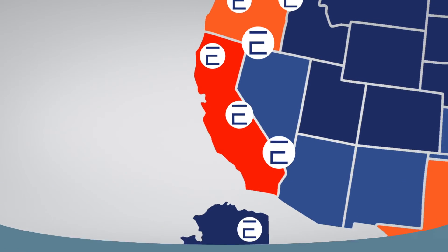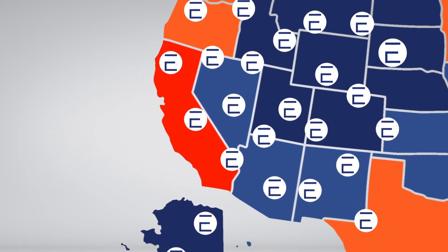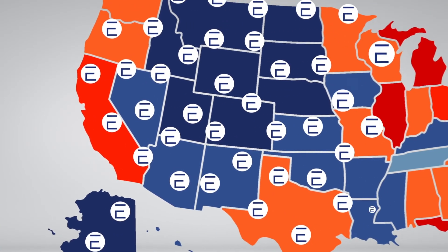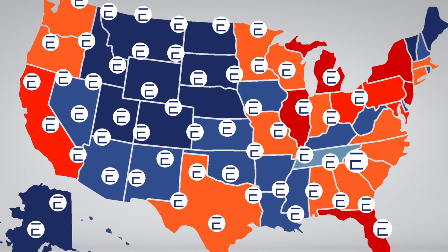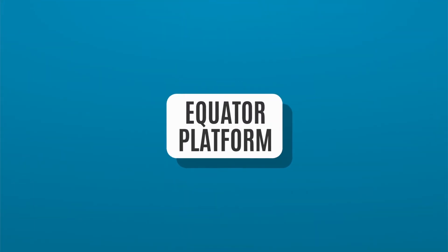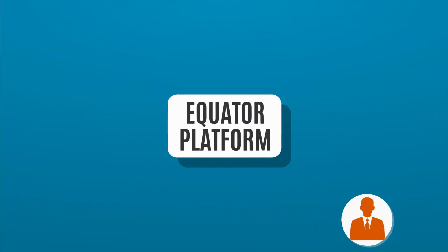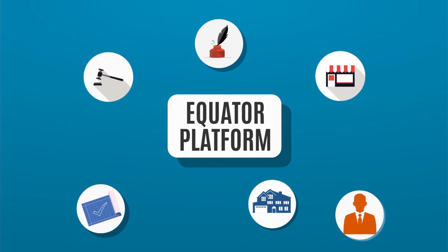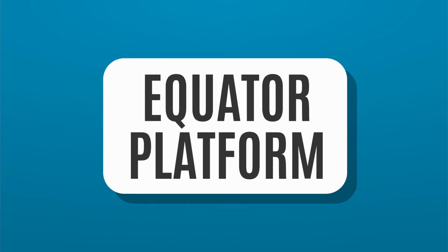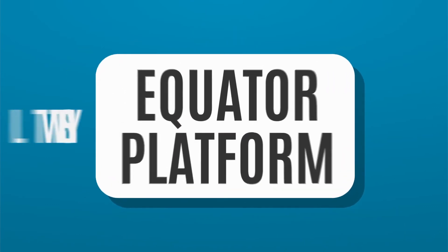In addition, Equator Pro includes access to a network of over 60,000 agents and 34,000 real estate vendors. Your staff can easily select and communicate with real estate agents, vendors, title escrow companies, repair contractors, appraisers, eviction attorneys, borrowers, and buyers — all in one easy-to-use platform.